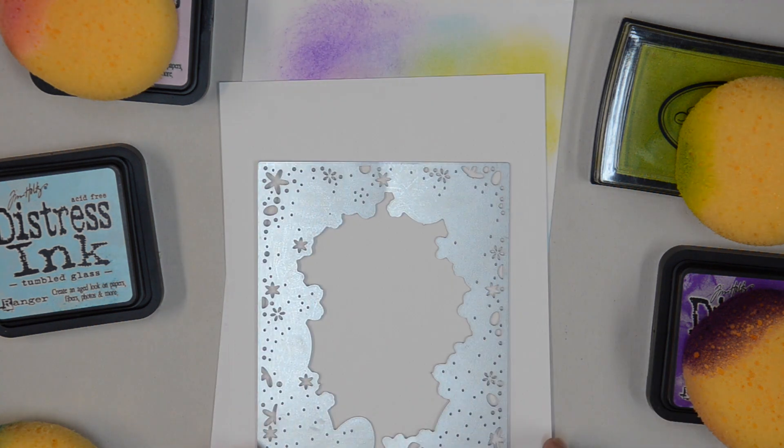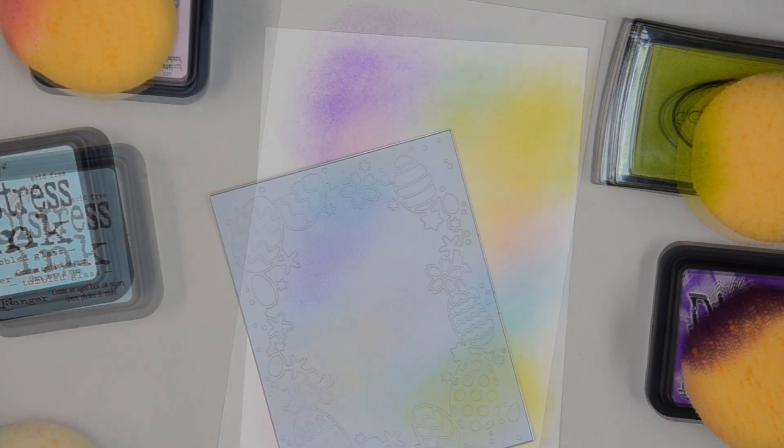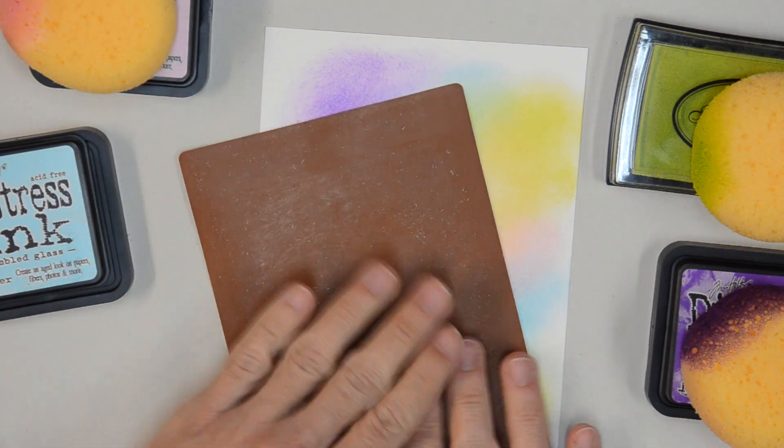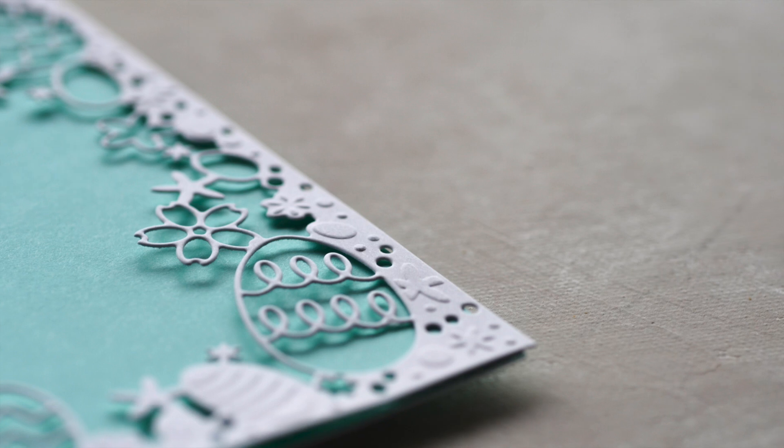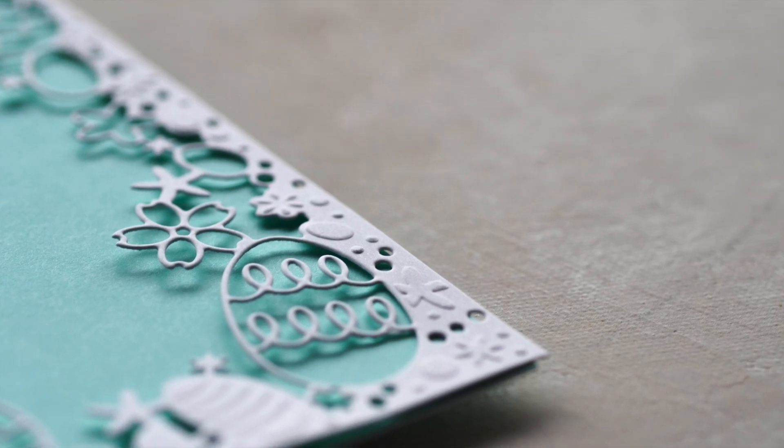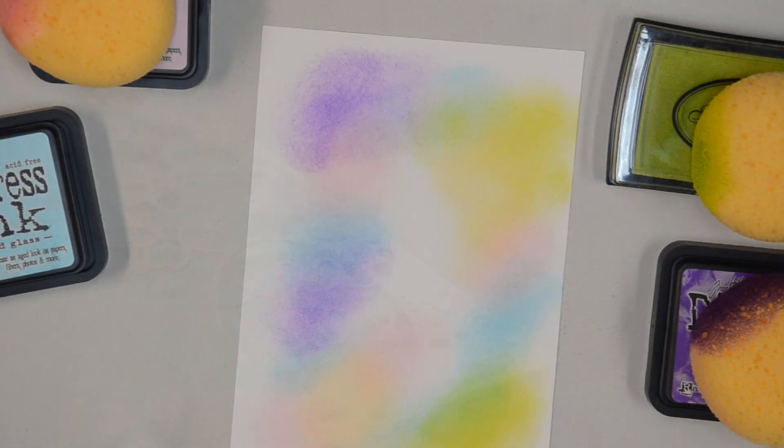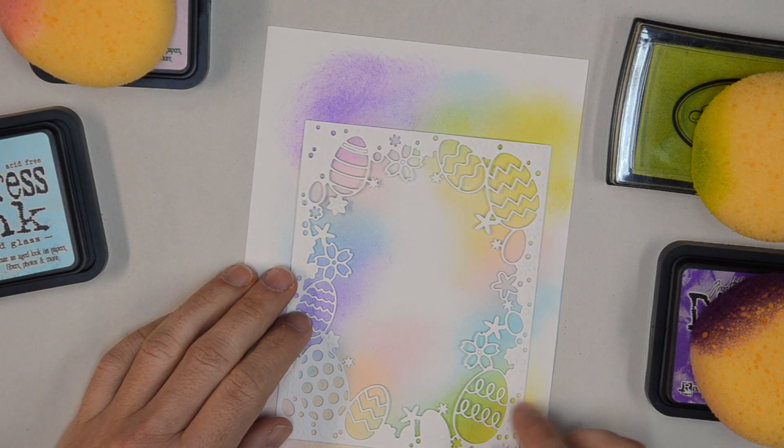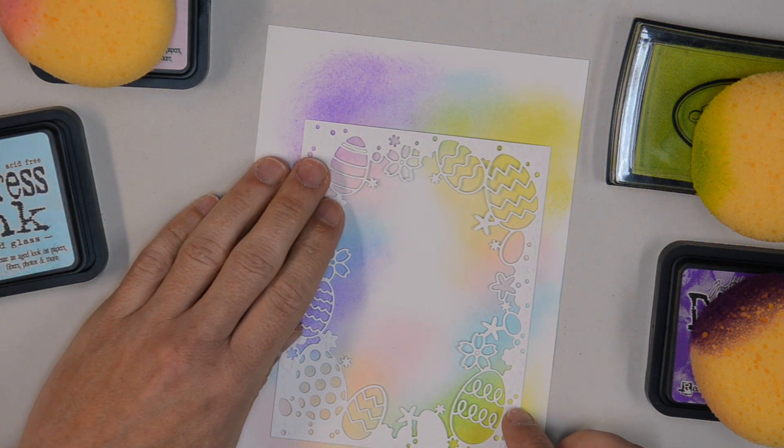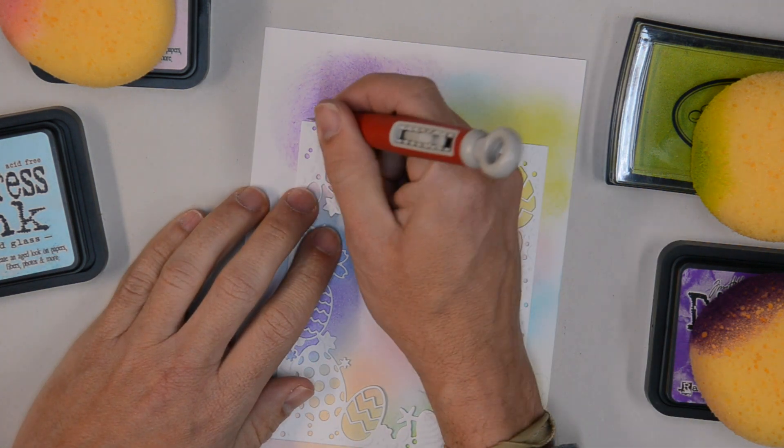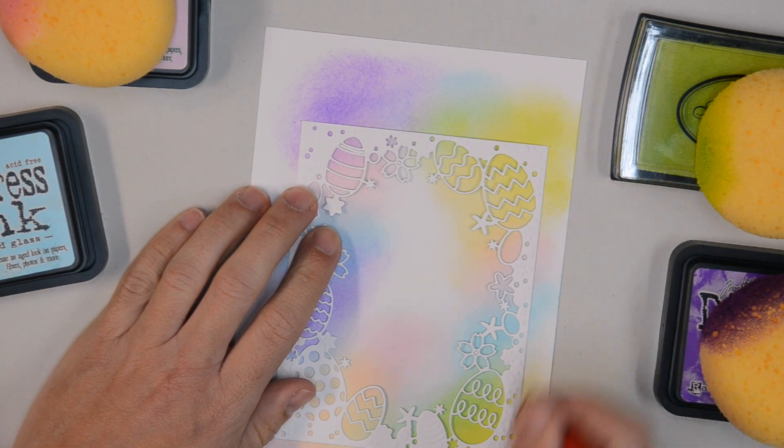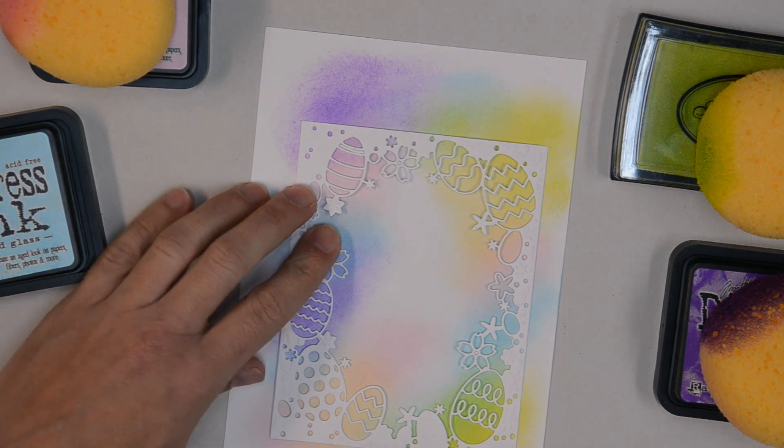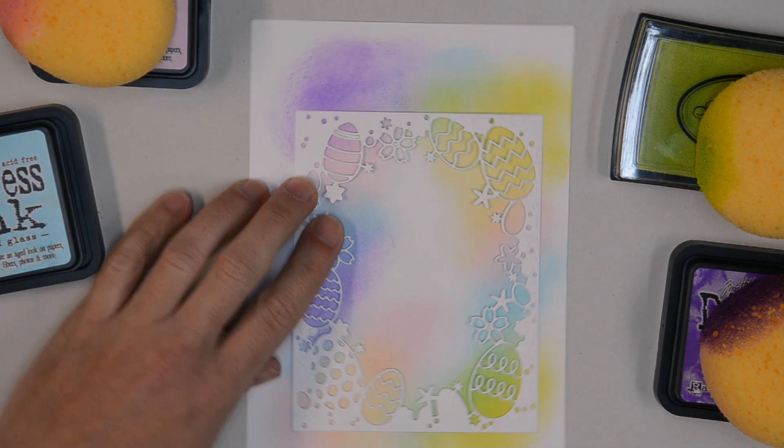Now you're going to run the die through a die cut machine with a piece of white card stock. Then run it through again with an embossing pad with the die cut still stuck inside the die. This will create raised details throughout the frame. Now place the die cut over the sponged area. You'll want to line it up so it corresponds to some interesting areas of color. I'm going to mark the corners with my craft pick again so that I can trim that down and fit it behind this die cut.